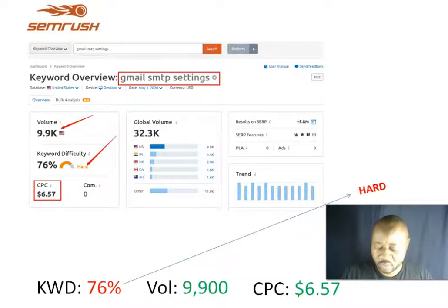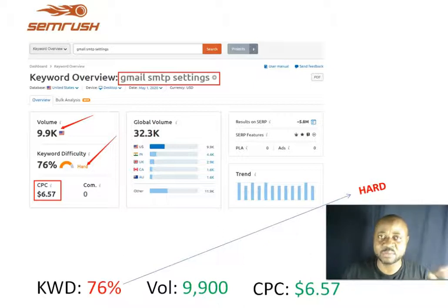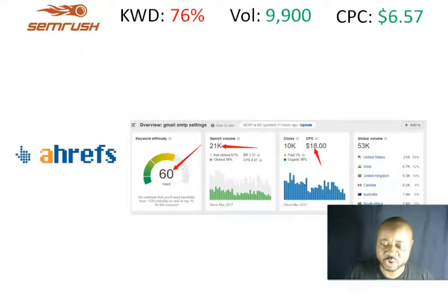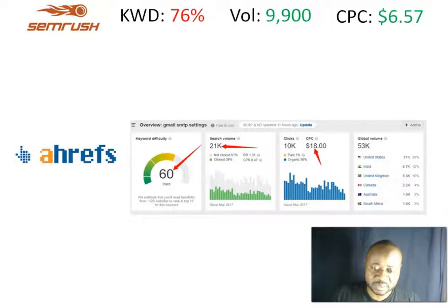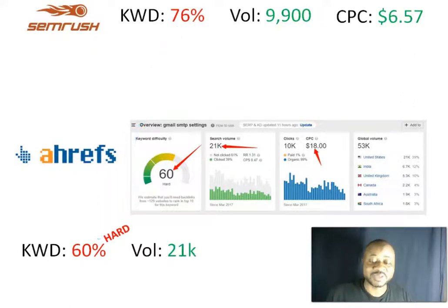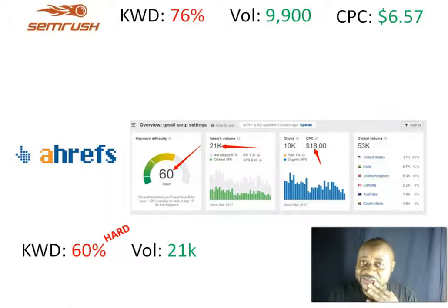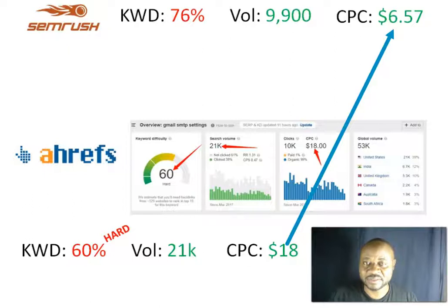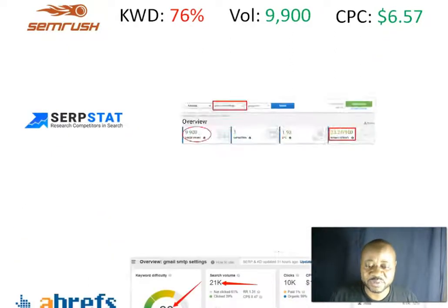Moving to the next tool, Ahrefs. According to Ahrefs, the keyword difficulty is 60%, which is also hard, similar to SEMrush's 76%. The volume is 21,000 searches for that month from the US on Google.com, and the CPC is $18 — quite high above SEMrush.